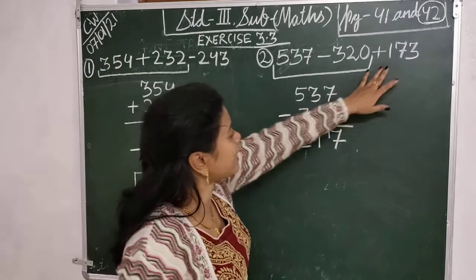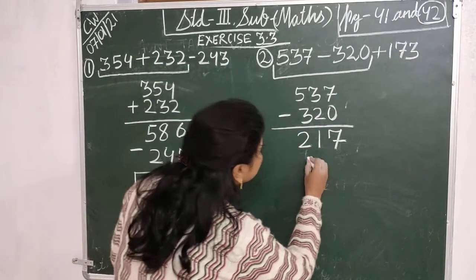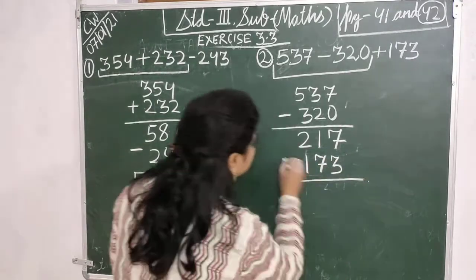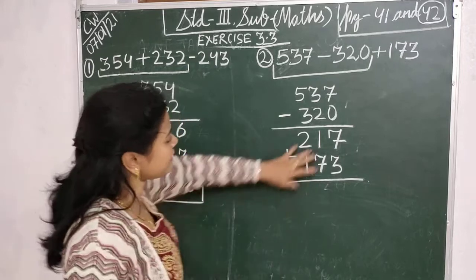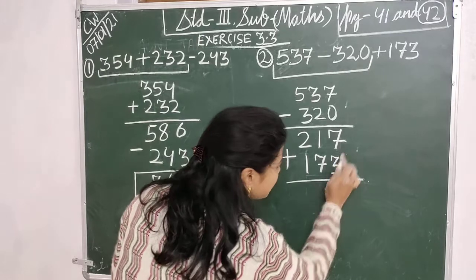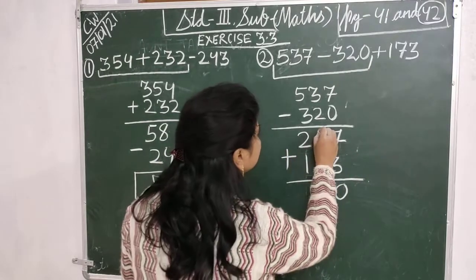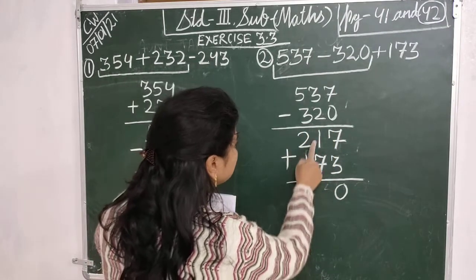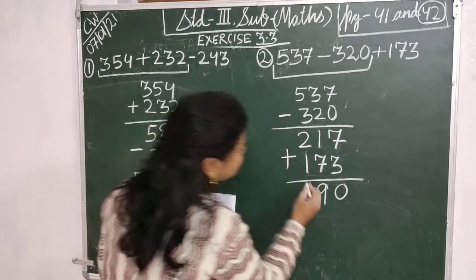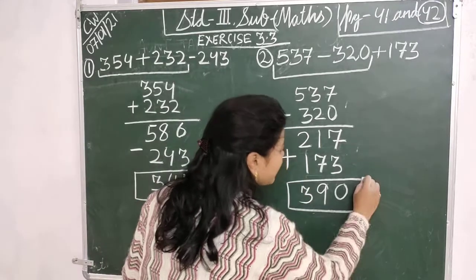Now in the next step you have to add 173. So I will write here 173 and add these numbers. Let's start: 7 plus 3 is 10, so I will write here 0 and take 1 to the tens place. 1 plus 1 is 2, and 2 plus 7 is 9, so I will write here 9. Then here 2 and 1: 2 plus 1 is 3. So your answer is 390.